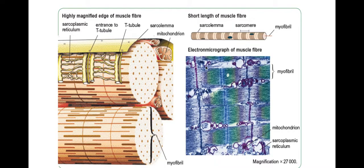You also need to be aware of how this looks on an electron micrograph, so you do need to be able to label a myofibril on this image. Also keep an eye out for mitochondria as well, which they do like to ask about.